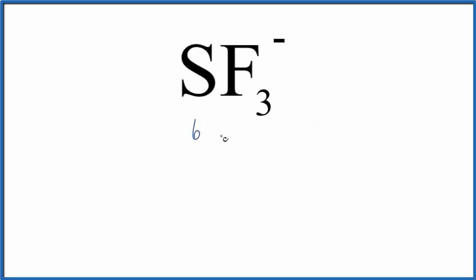Sulfur has six, fluorine has seven, we have three fluorine atoms, plus this here means we have an extra electron - 21, 22, 28 total valence electrons for the SF3- Lewis structure.